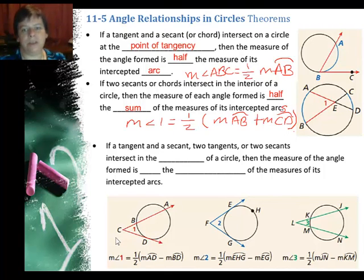Now last but not least, if a tangent and a secant, two tangents, or two secants intersect, notice the intersection is always outside in the exterior of a circle, then the measure of this angle is half the difference, not the sum, but the difference of the two arcs.